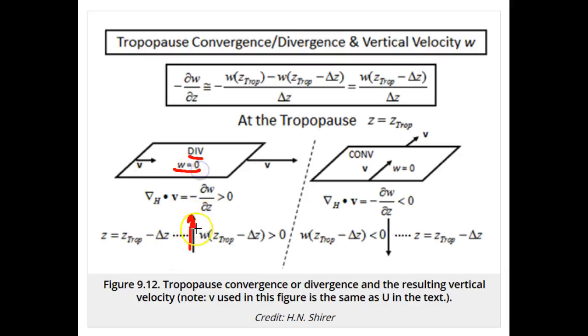Therefore, the partial of w with respect to z must be negative as it approaches the tropopause, i.e. w is decreasing with increasing height to zero at the tropopause from a positive value in the troposphere.